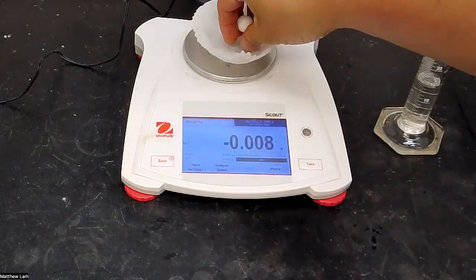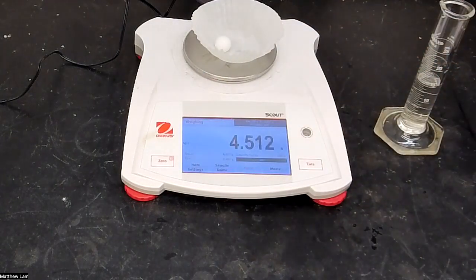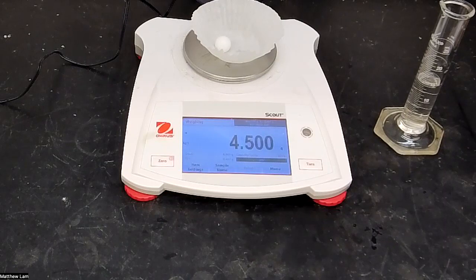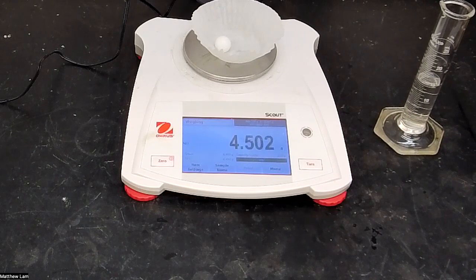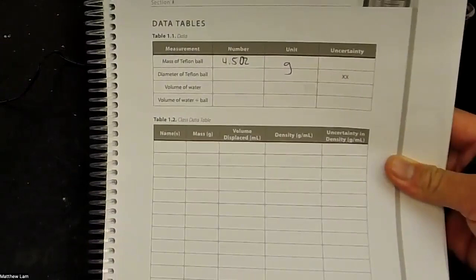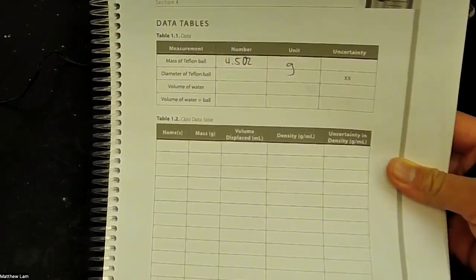And so we put the Teflon ball on there and we weigh the mass of the Teflon ball. Now it looks like the mass of the Teflon ball is about 4.502. And so we'll write it in our lab manual: 4.502 grams is the mass of the Teflon ball.